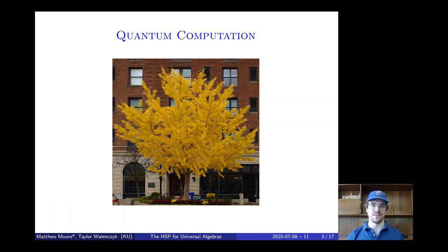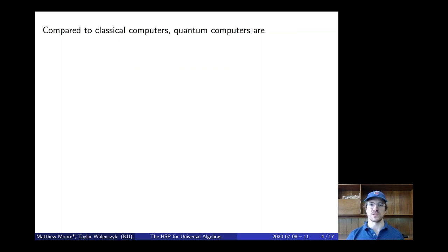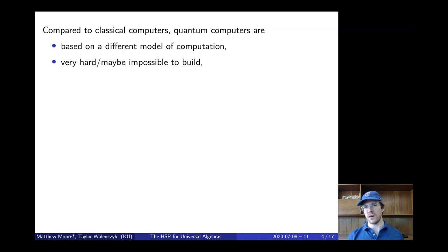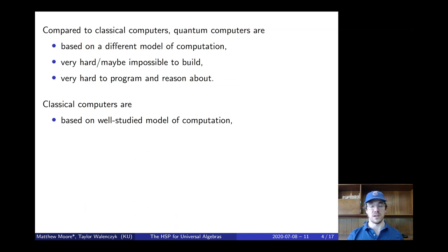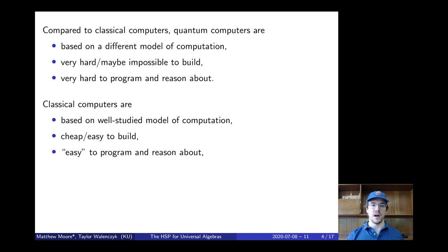Let's begin by talking about quantum computation. Compared to classical computers, quantum computers are, first of all, based on a different model of computation — the quantum circuit model. Second, they're very hard, or maybe even impossible, to build at scale. You can build ones that have on the order of 60 to 70 qubits, but building ones with thousands of qubits seems quite far beyond our means right now. And lastly, they're quite difficult to program and reason about, partially because they're based on quantum mechanics and partially because they're based on a different model of computation.